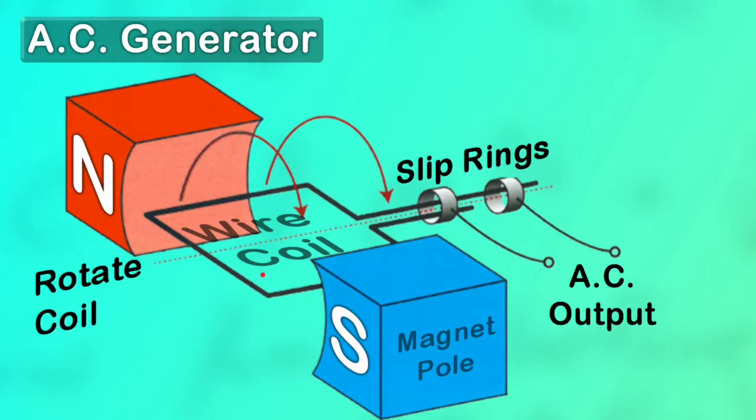That produces an EMF across the ends of the wires. One end is attached to this slip ring, the other end of the coil is attached to this slip ring. As the EMF is produced across the coil, it turns up at these two slip rings, and then brushes carry that off to a circuit.